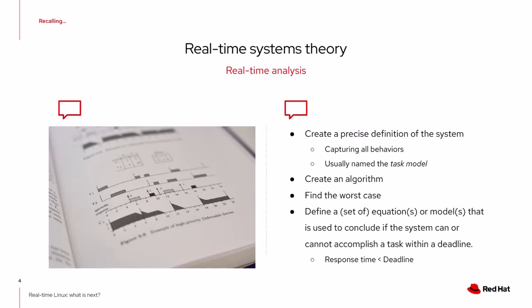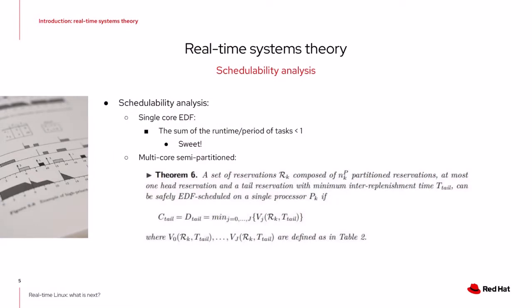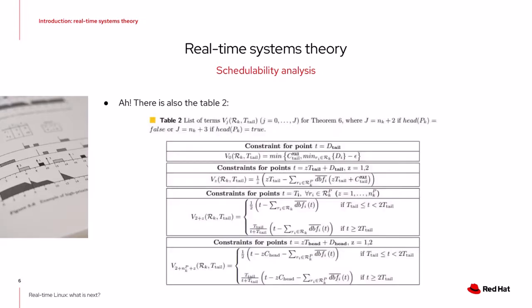Based on the task model, the algorithm is analyzed trying to demonstrate that worst-case behaviors are known and bounded. This analysis uses mathematical reasoning, like theorems, and produces a set of equations or models to conclude whether the system can accomplish all tasks within their deadlines — in simple words, showing that the response time of all tasks is shorter than the deadline. Some results have a relatively simple format, like the schedulability analysis for single-core EDF, while others in more complex scenarios require more sophisticated mathematics.